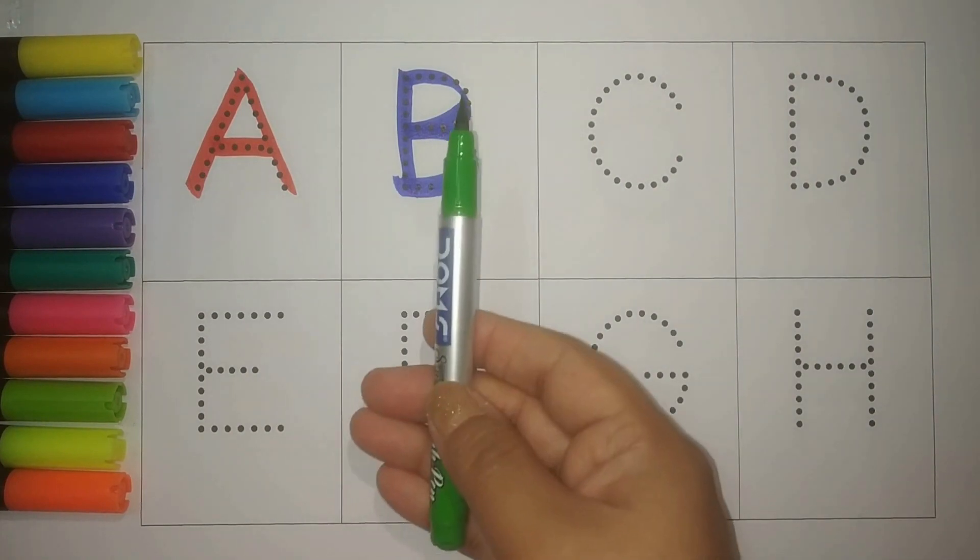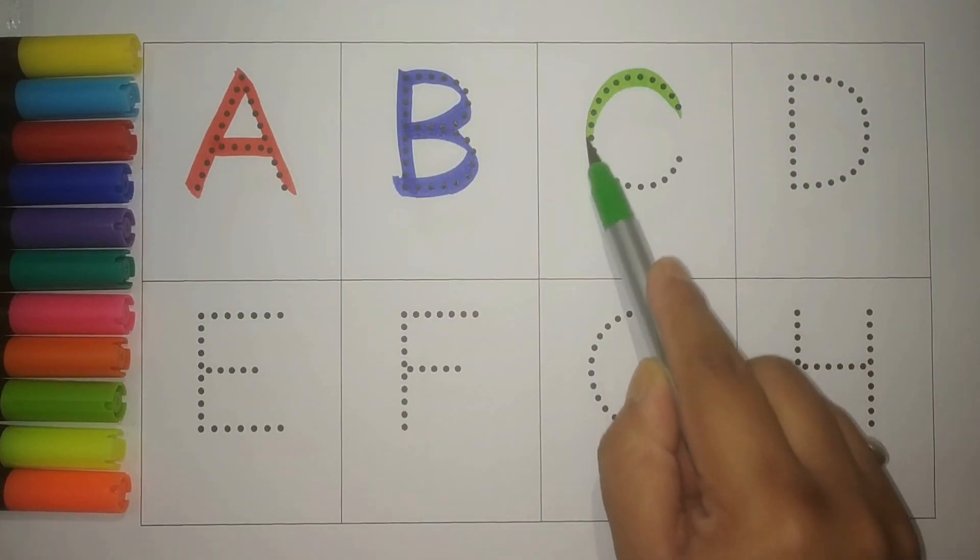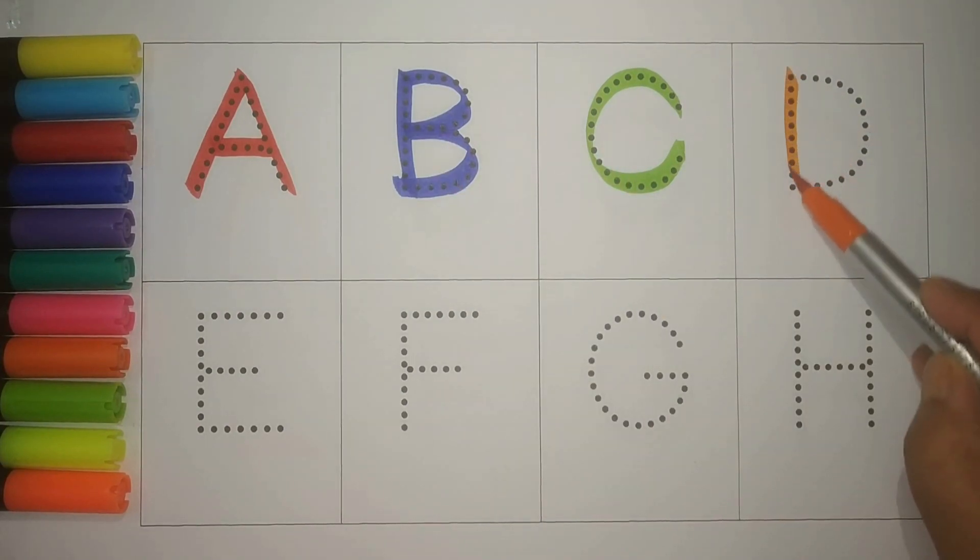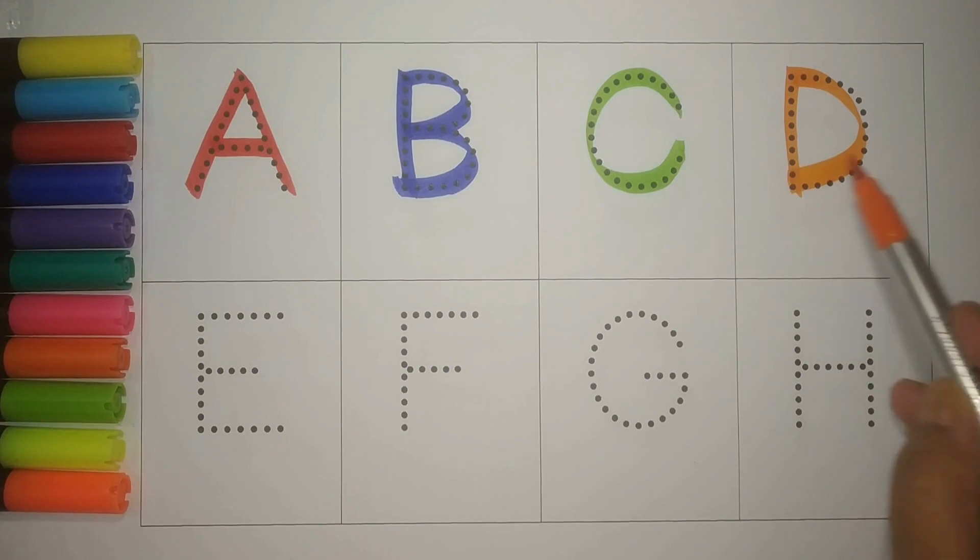Green. C, C for cat, billi, meow meow. Orange. D, D for dog, kutta, bow bow.